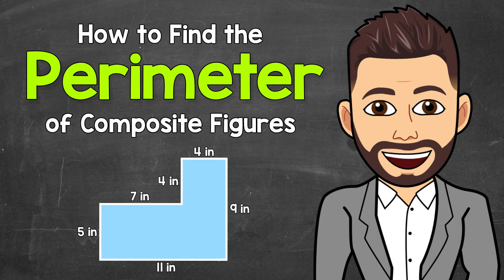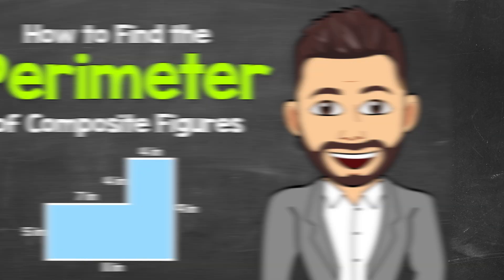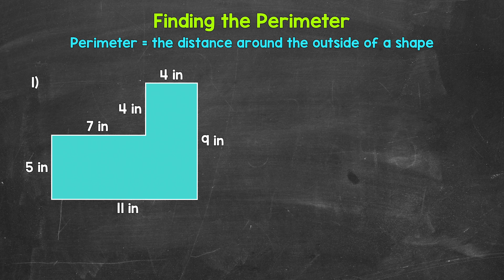Welcome to Math with Mr. J. In this video, I'm going to cover how to find the perimeter of a composite figure, a composite shape. And remember, perimeter is the distance around the outside of a shape.